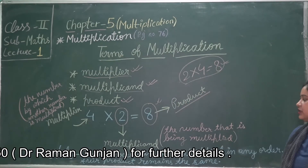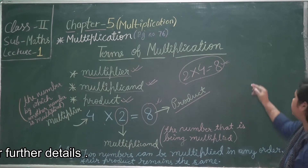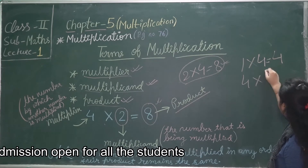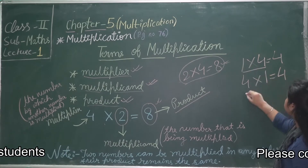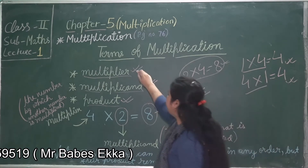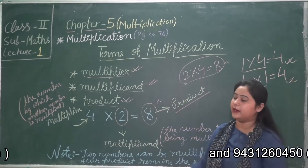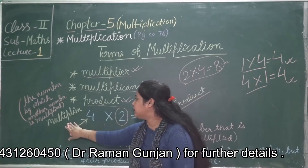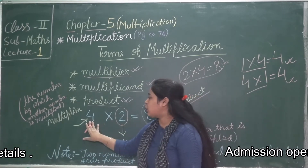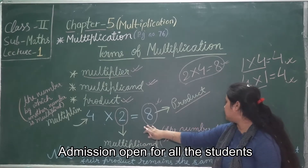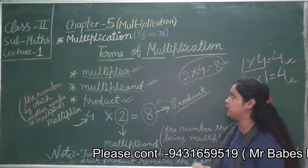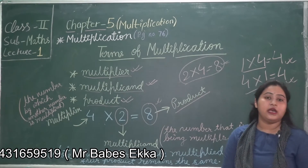In multiplication, when two numbers are multiplied in any order, the product remains the same. For example, 1 multiplied by 4 is 4, and 4 multiplied by 1 is also 4. So to recap: the multiplier is the number by which another number is multiplied — 4 is the multiplier; 2 is the multiplicand because it is the number being multiplied; and 8 is the product.